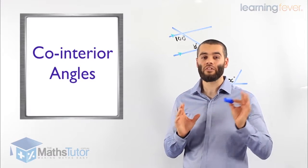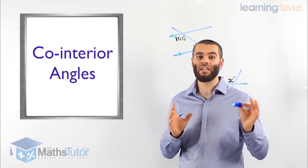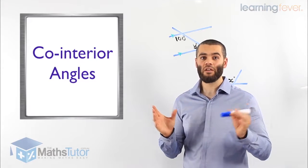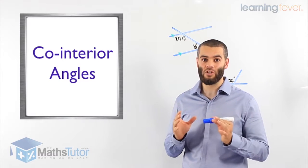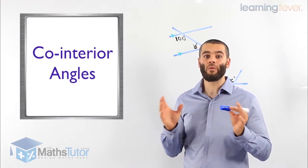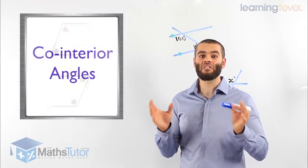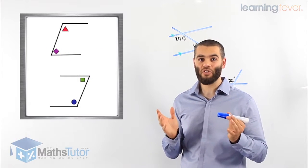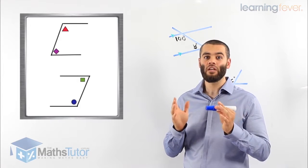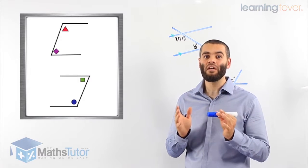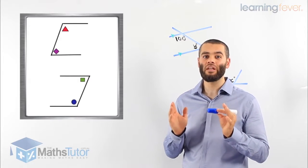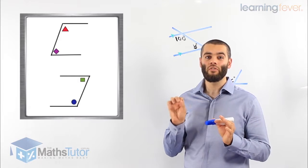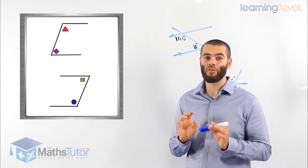With alternate angles, we were looking for a Z or an S looking shape. Corresponding angles, we were looking for an F looking shape. Co-interior angles, we're looking for a C looking shape. We use the highlight trick to see if we can create a C, and then we know straight away — if we do create a C using the angles, then straight away we know these are co-interior angles.